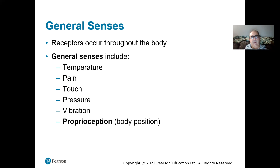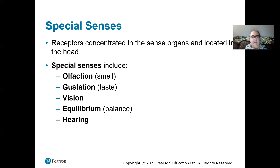Those sensations come from everywhere in our body — those are our general senses. Our brain has to not only interpret that sensation but also where it's coming from. Then we have special senses. The difference is special senses have receptors concentrated in one area of the body — that's the only area where you have that sensation. There are five special senses: smell, taste, vision, hearing, and equilibrium. Equilibrium is the one we don't grow up hearing about. Vision is only in your eyes — you can't see all throughout your body.